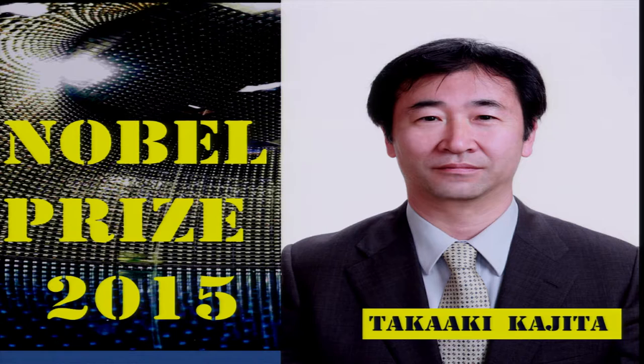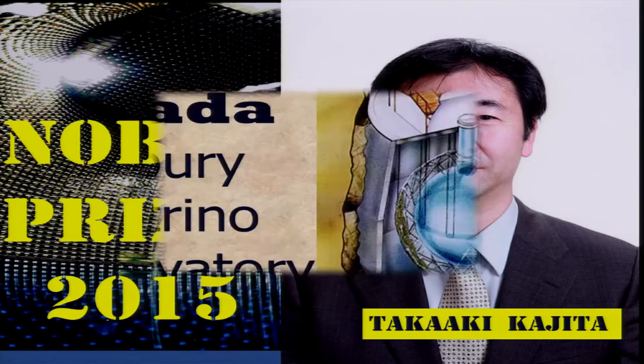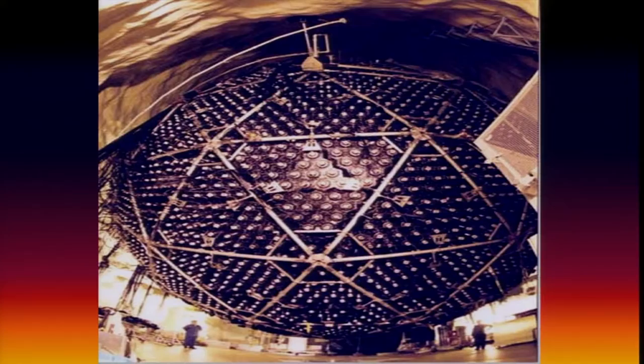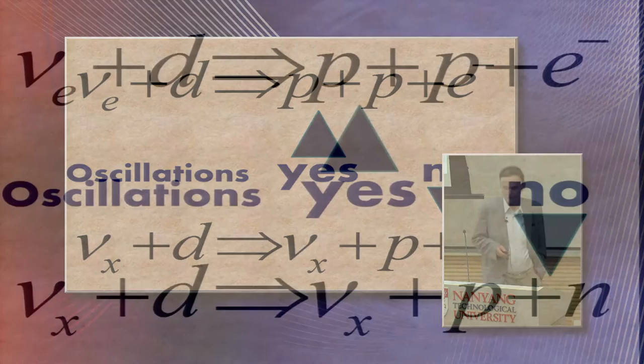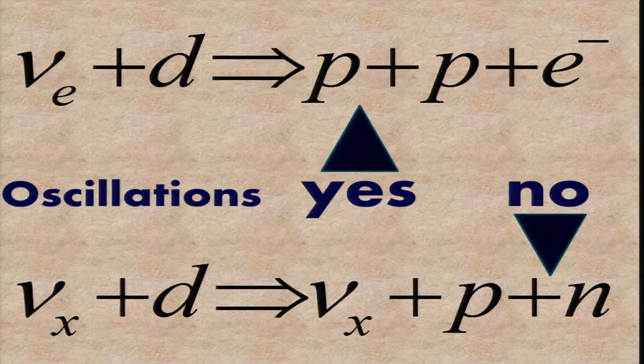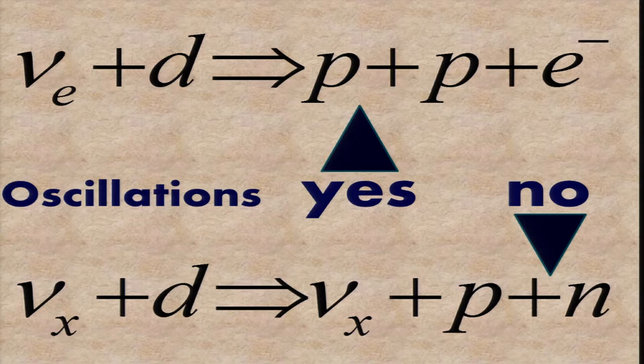The Nobel Prize this year, or last year, was given to Kajita, his successor in Kamioka. In 2001, in Canada, one also observed, in particular, the solar neutrinos with the SNO detector. Here is a picture of the detector.